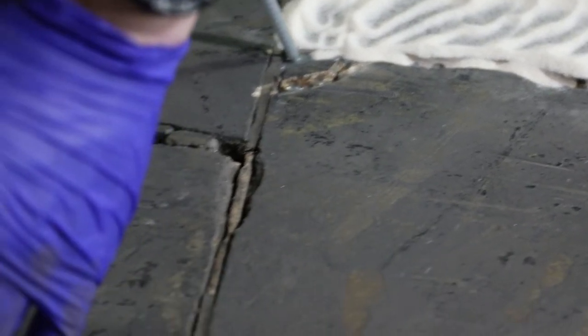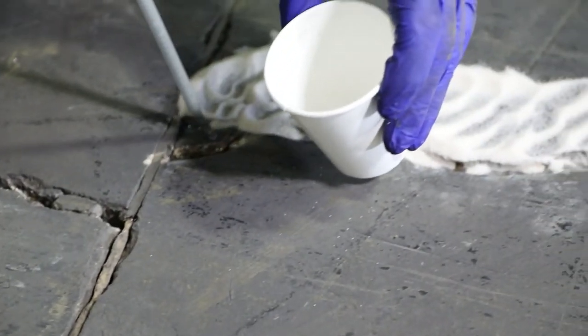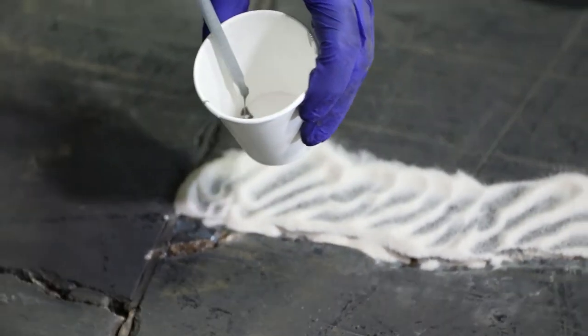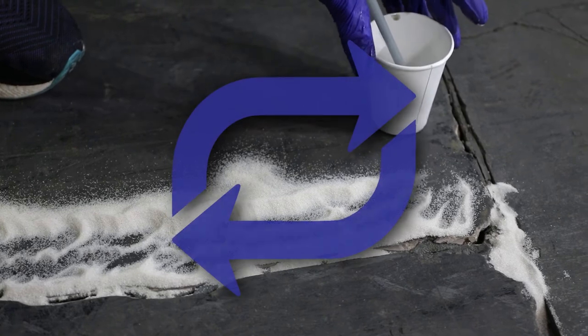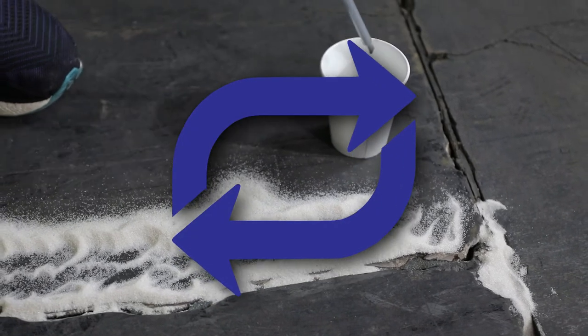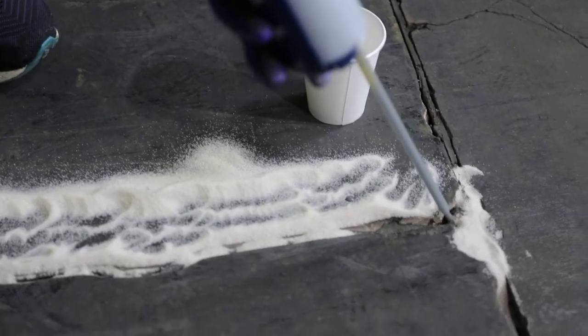When reaching the end of the crack, hold a disposable cup under the mixer and return with it to your starting point. This will prevent drips from staining concrete. Repeat each of these steps, layering sand and 555 until the crack is completely filled.